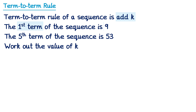We're told the first term is 9. So we can write that down at the start of our sequence. And we're told the fifth term is 53. So if we do a line for the second term, the third term, the fourth term, we can write the fifth term as 53. So to get from one term to the next in this sequence, we add k. So to get from 9 to the second term, we add k.